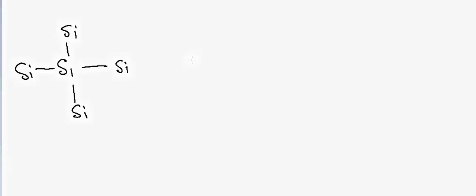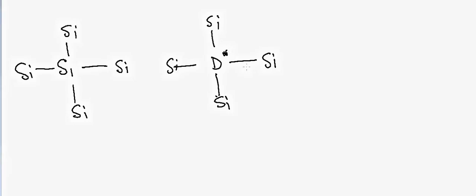Now if we dope silicon with something which has an extra electron — we need four electrons for bonds on all four sides, so if we use something which has five electrons in the outer orbital then we will have one extra electron. This is what we call doping. In this case we have all four sides occupied and then there is a free electron where you dope the material, and this is called an n-type semiconductor. If we apply voltage, this free electron will be able to travel and conductance will occur.